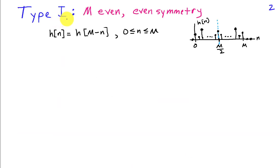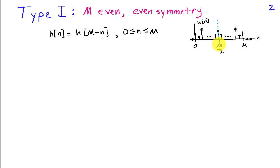Type 1 refers to an FIR filter with an even order M and also even symmetry about the midpoint. That means H of n is equal to H of M minus n on the entire interval. If we graph this, the midpoint is M over 2, which falls on an index because M is even, and the impulse response is symmetric about the point M over 2.